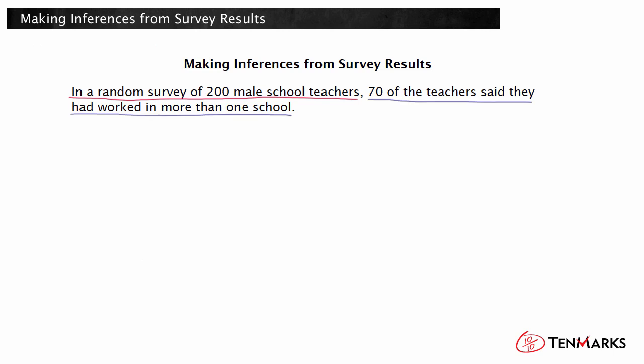You can then calculate the percentage of the sample who gave a certain response. The percent is the part over the whole times 100. In this case, 70 out of the 200 teachers said they worked at more than one school. That is 35%.